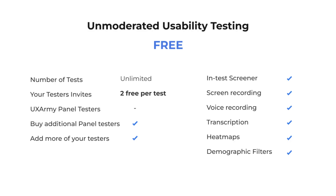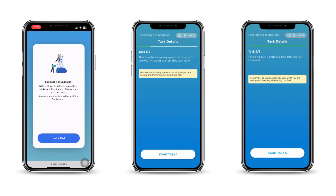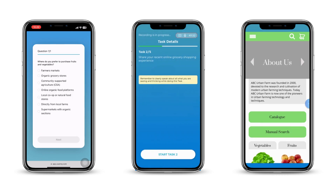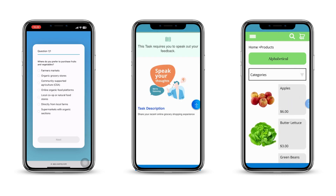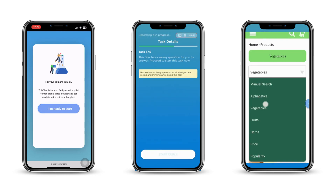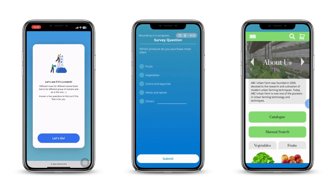Before we wrap up, let me explain how our free plan works. With the free plan, you can collect up to two responses for free from your own testers for every test you create, and you can create as many tests as you want. This means you can do a dry run as many times as you want. Experience your own test as a tester using the physical device the test was built for, like a mobile phone.